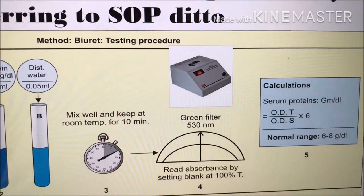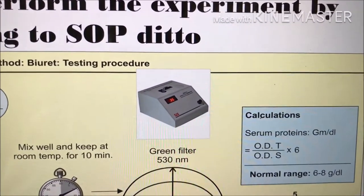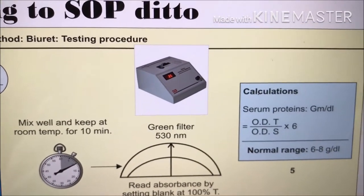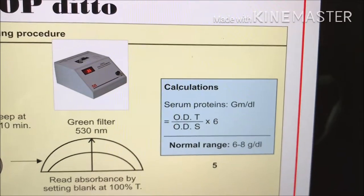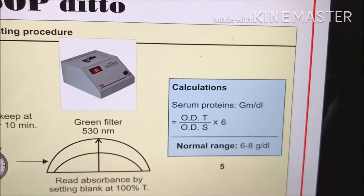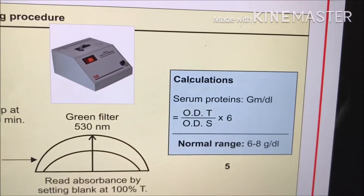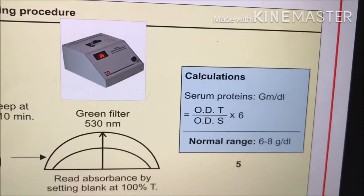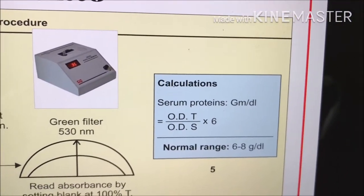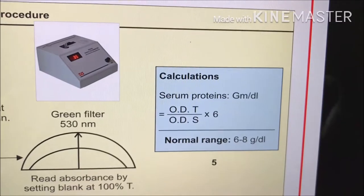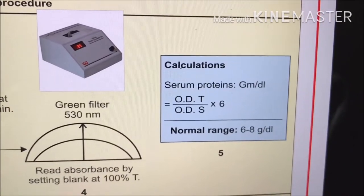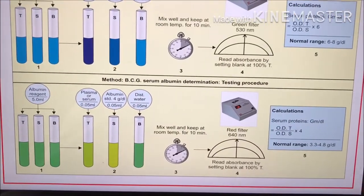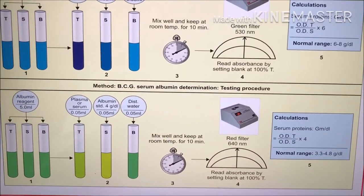After 10 minutes, take readings on the photometer by using a green filter. Then calculate the results — serum proteins in grams per deciliter — by using this formula: optical density of test divided by optical density of standard, multiplied by 6. From the normal range, you will be able to know whether the value obtained is normal or abnormal. In the same way, perform the test for albumin determination.